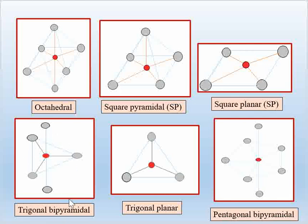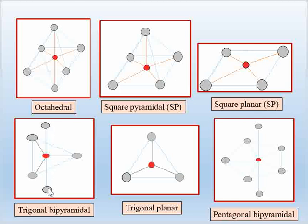The fourth geometry is trigonal bipyramidal geometry. In this geometry, three metal-ligand bonds are present at the trigonal plane, which is the xy plane, and two ligands are present at the axial position, above and below the plane.